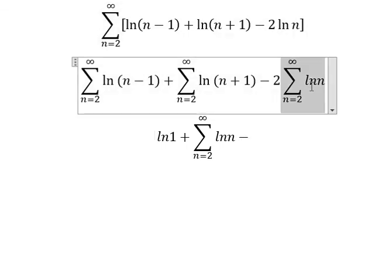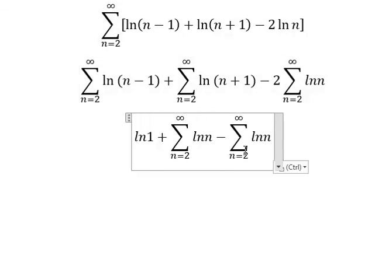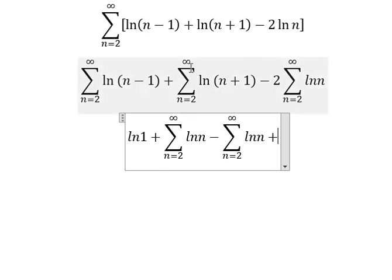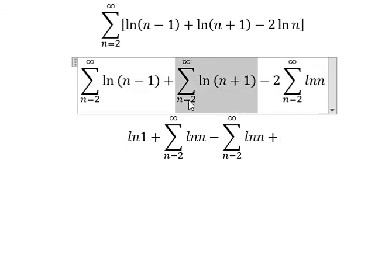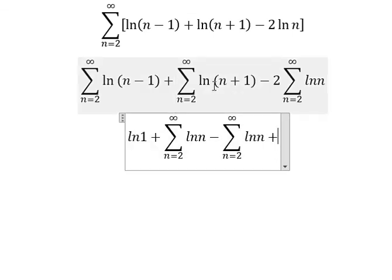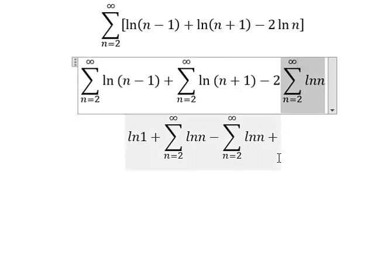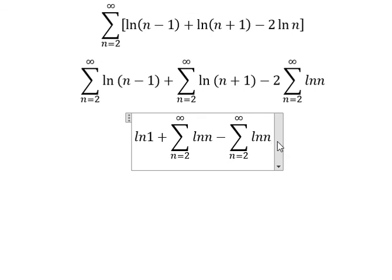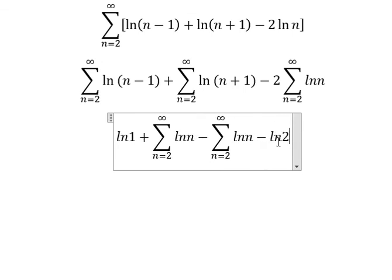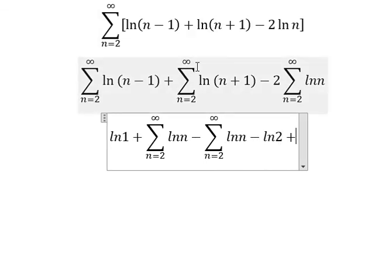Now we go to this one. When n equals 2, we put 2 in here, so we will have ln 3. But this one is n equals 3, so we can separate them into negative ln 2 plus this one minus this series. Now we start at n plus 1.